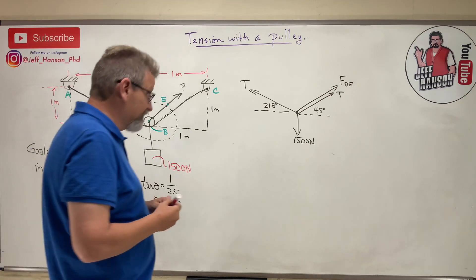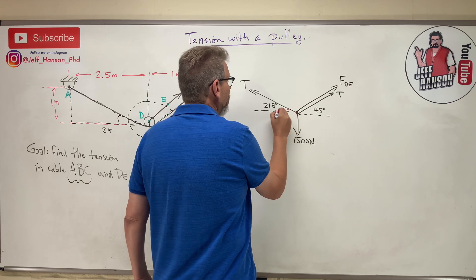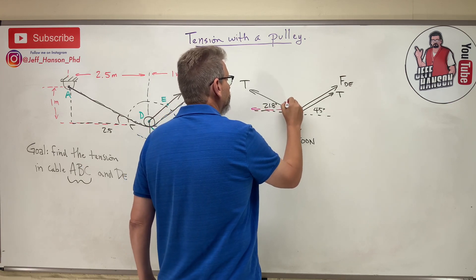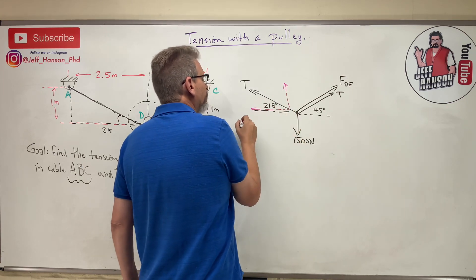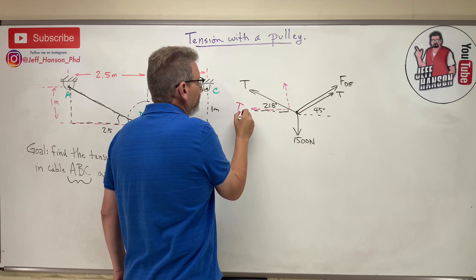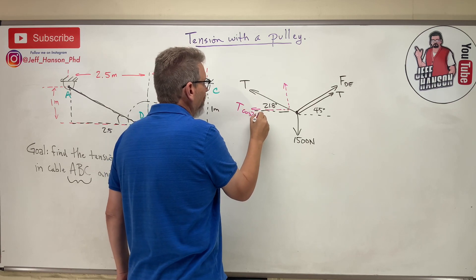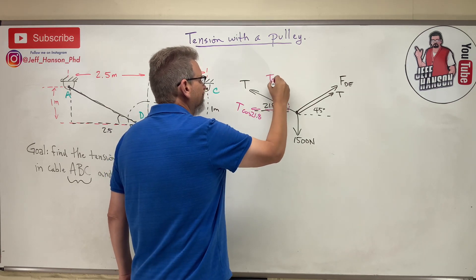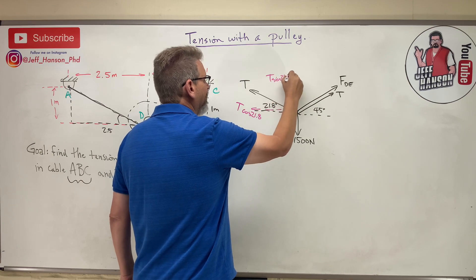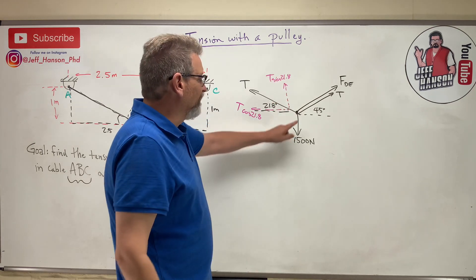Let's do it then. So this guy over here has two components, and they are T cos 21.8 and T sin 21.8.